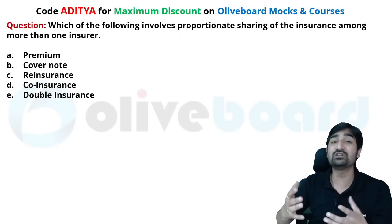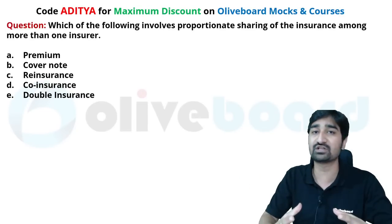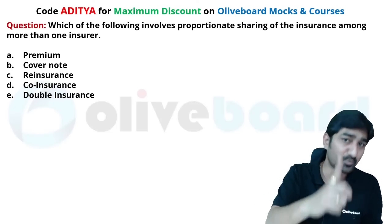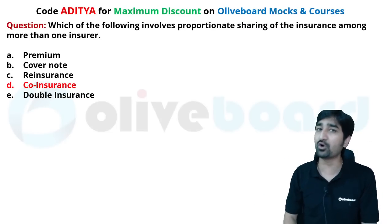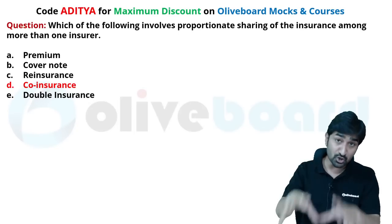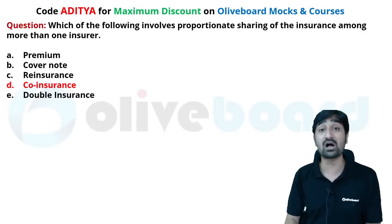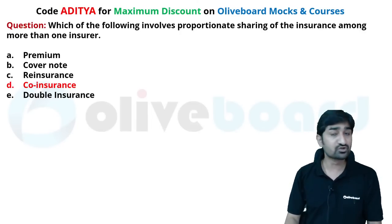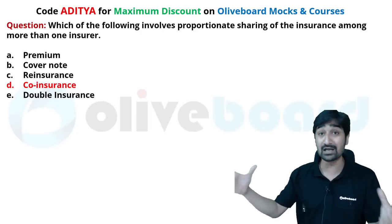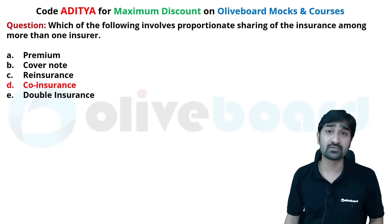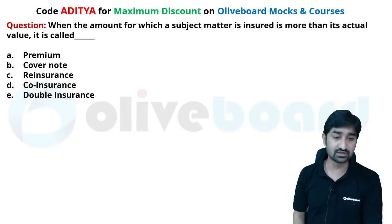When two insurance companies are involved to provide insurance for one product — each contributing per product — that is called co-insurance. In marine insurance, a ship's value is very high, so sometimes one insurance company may deny to provide the full insurance amount on such a high asset value. In that case, two companies can collaborate to provide the insurance — that is co-insurance. When the amount of a subject matter insured is more than its actual value, it is called double insurance, used in cases of art and antique products. For example, a painting made with materials worth 5 lakh rupees may be valued at 10-30 crore if made by a famous painter.